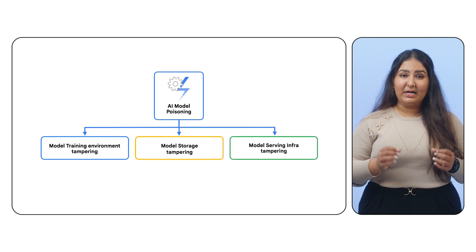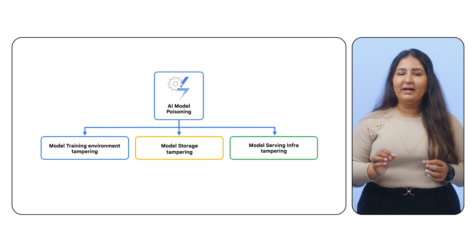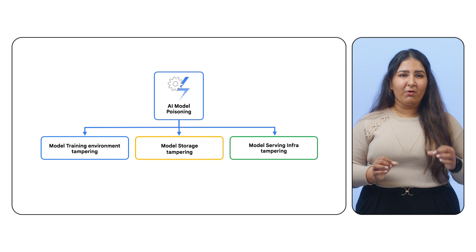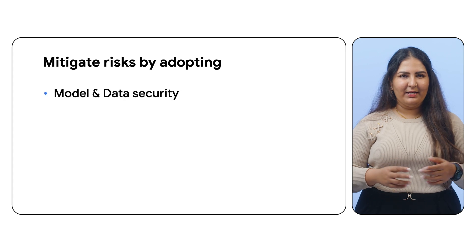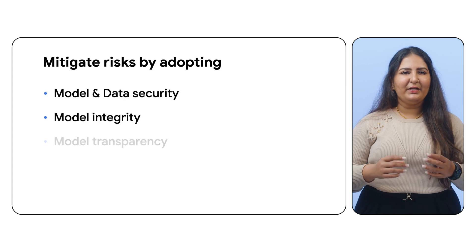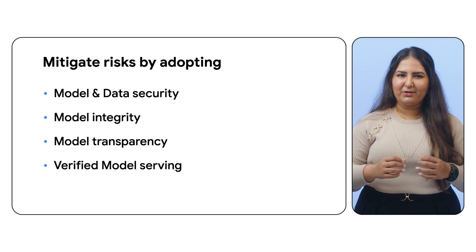Similarly, the model's serving infrastructure can provide attackers with access to production models in case of a successful attack. Securing AI model development isn't just about the model itself, but also safeguarding the development pipeline. Now that we've seen the risks, let's explore how to mitigate them by focusing on four key areas: model and data security, model integrity, transparency, and verified model serving. These should all be adopted in addition to hardening the individual components in the supply chain.